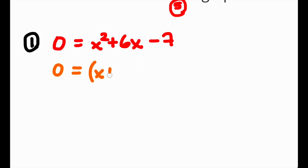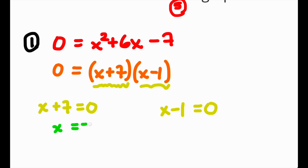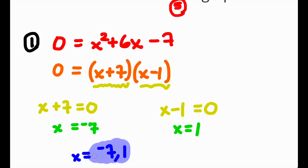Set each factor equal to 0. Setting x plus 7 equal to 0 gives x equals negative 7. Setting x minus 1 equal to 0 gives x equals 1. So the x-intercepts are x equals negative 7 and x equals 1.